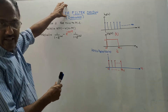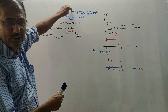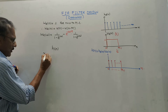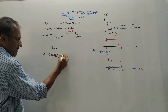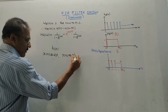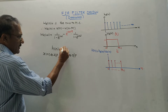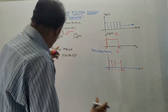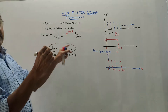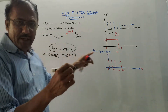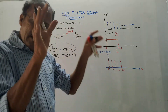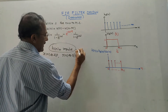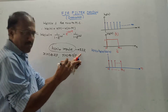First of all, what is FIR? FIR stands for Finite Impulse Response. Impulse response is denoted by H(n). Input is denoted by X(n), output is denoted by Y(n), and H(n) is known as the impulse response of the system. To design a filter, you design the value of H(n). If H(n) has a finite number of samples — not infinity — then it is known as an FIR filter: Finite Impulse Response Filter.